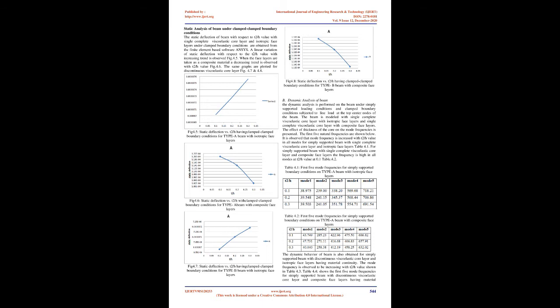A line load of 1000 N is applied at the top center nodes of the beam for both Type A and Type B beams after meshing. A point load is applied at the top center node of the plate for both Type A and Type B plates. Analysis of sandwich beams is carried out for two boundary condition cases: simply supported and clamped-clamped. For sandwich plates, clamped boundary conditions are applied — all areas representing the height of the plate are fixed — and this is applied to both cases.